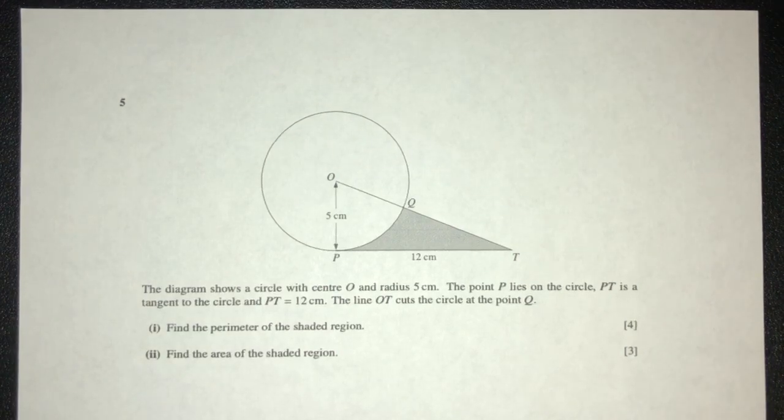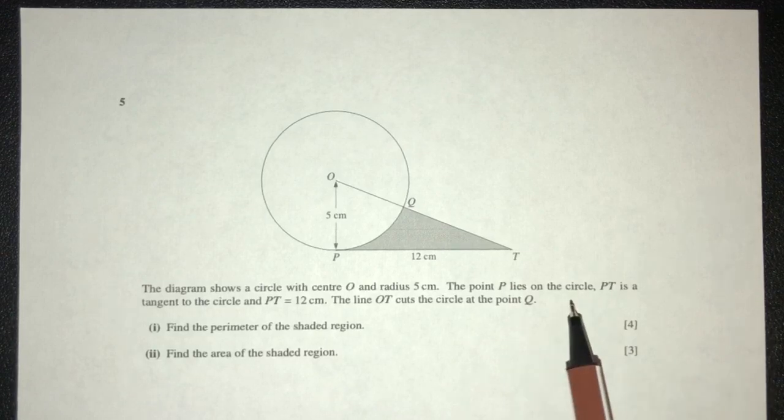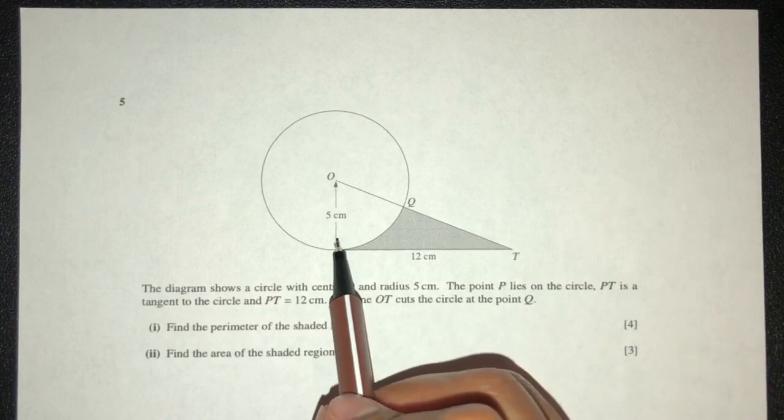Now let's move on to the next question. The diagram shows a circle center O and radius 5. The point P lies on the circle. PT is a tangent to the circle. So here we have 90 degrees, right?